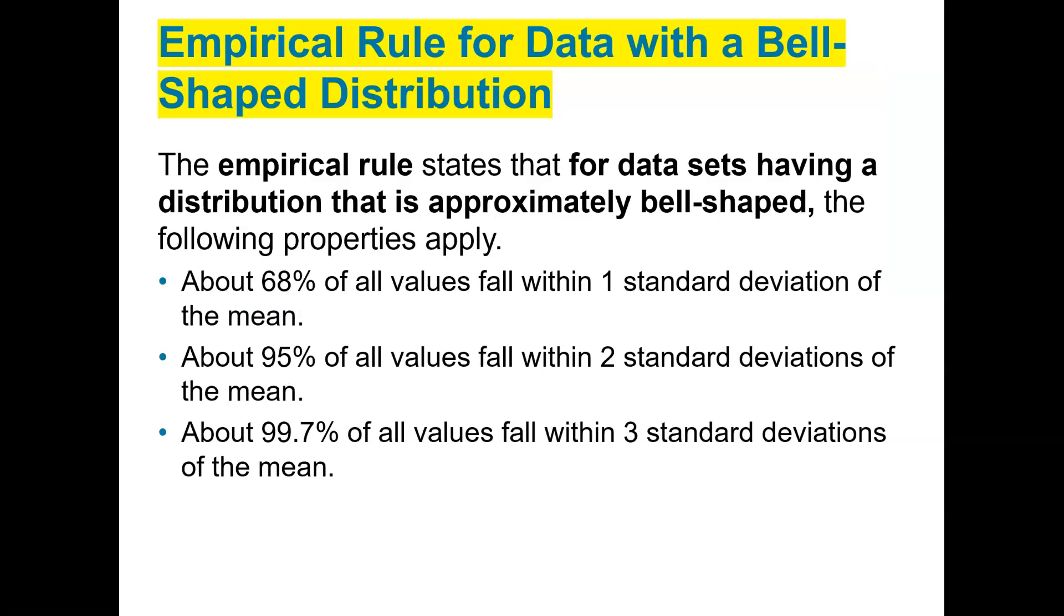So the empirical rule for data with a bell-shaped distribution, very important, states the following to be true: 68% of all values fall within one standard deviation of the mean, 95% within two, and 99.7 within three.